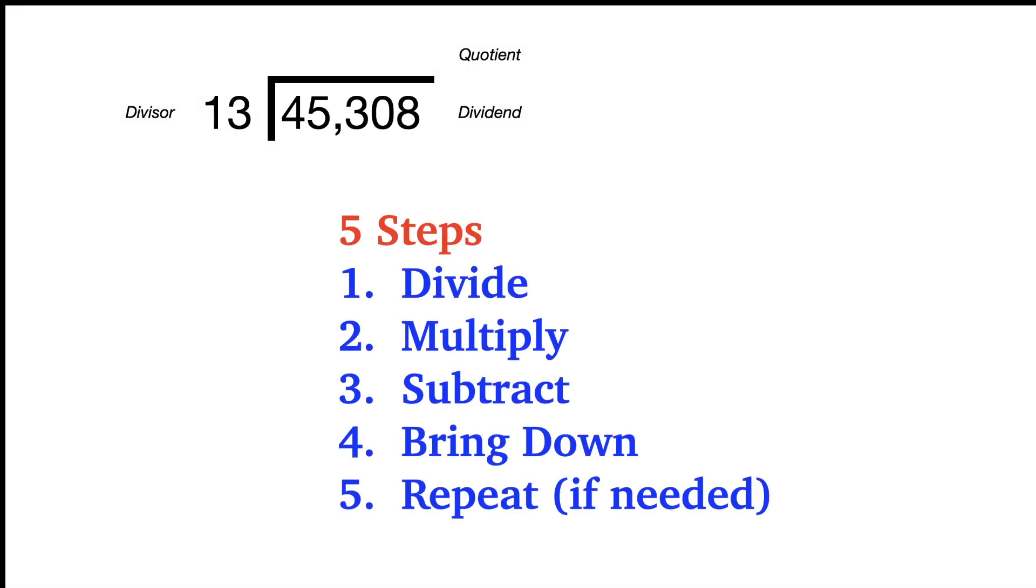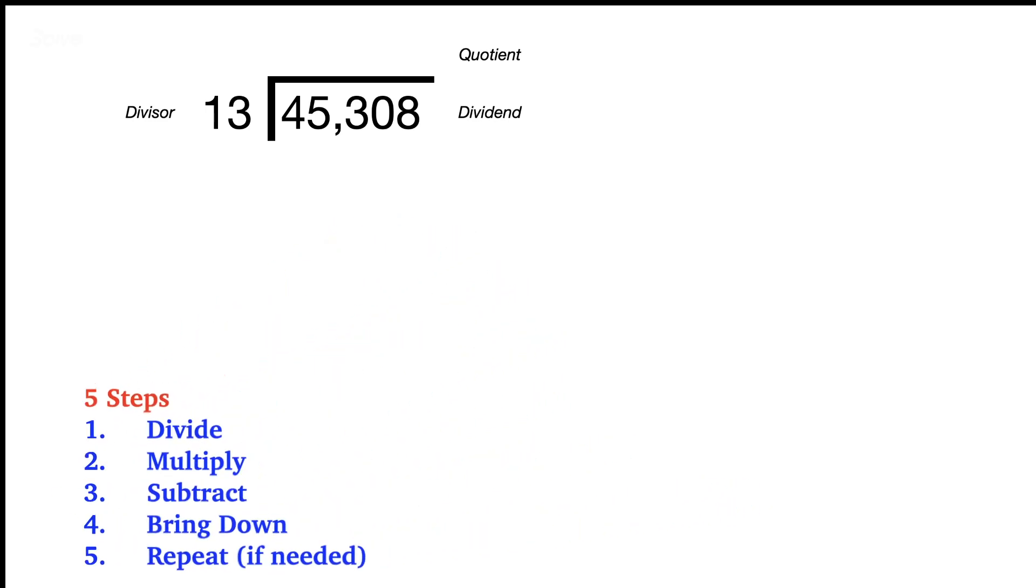We have five steps like always: divide, multiply, subtract, bring down, and then for each one we bring down we have to start all over again and repeat the process.